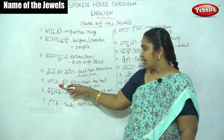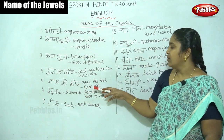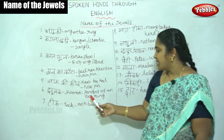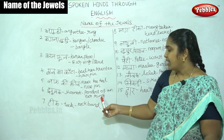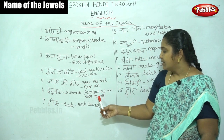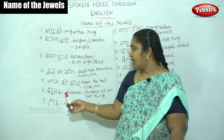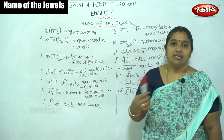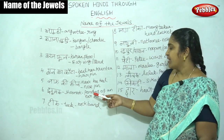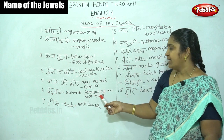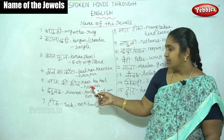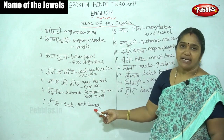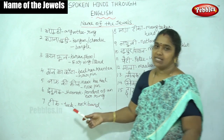Nakki kheel — nak. Nakki kheel is nose pin. Then Jumak. Jumak is earring, pendant of an earring. For example: Meri jumak — meri didi ko diya, means I have given a pendant of an earring to my sister. Teek is neckband.